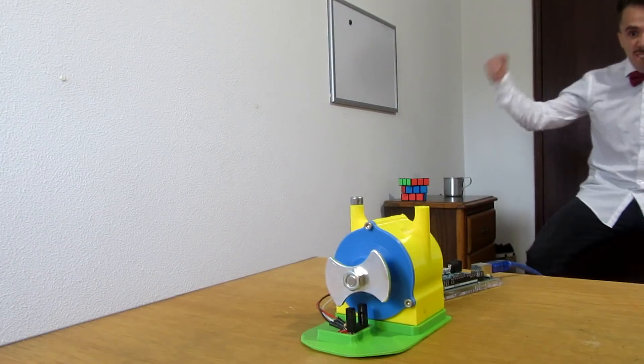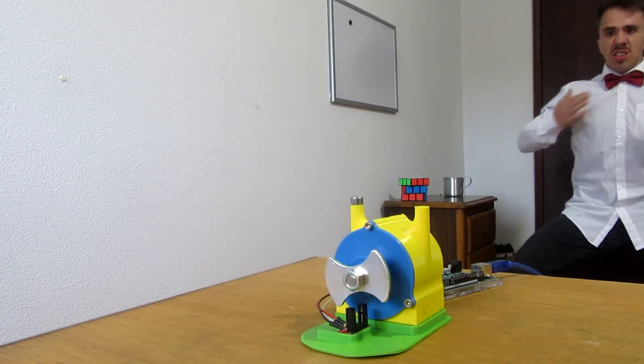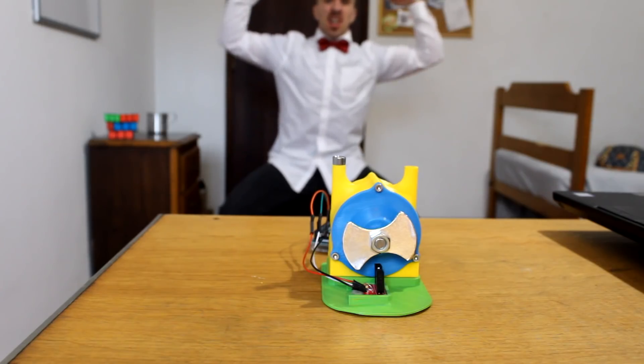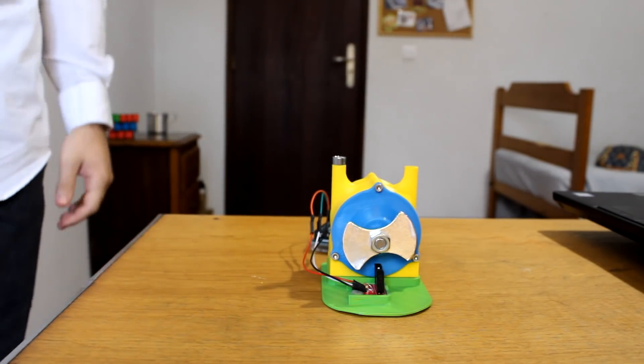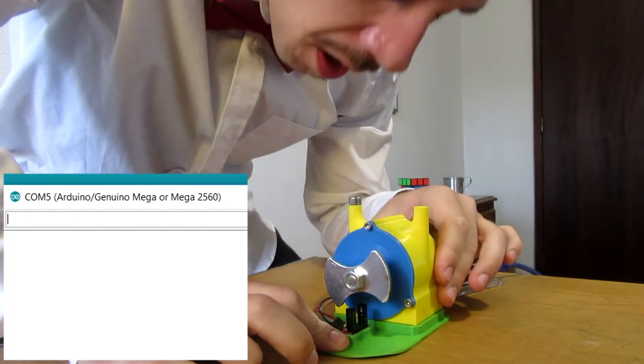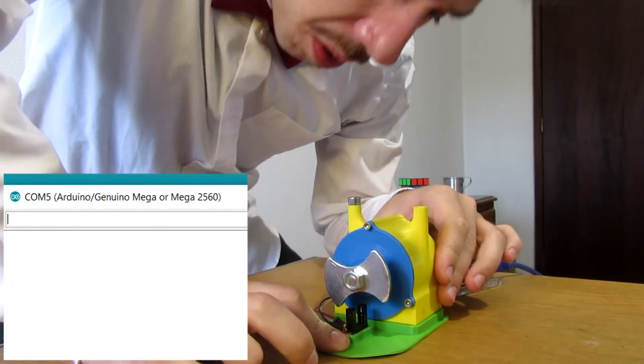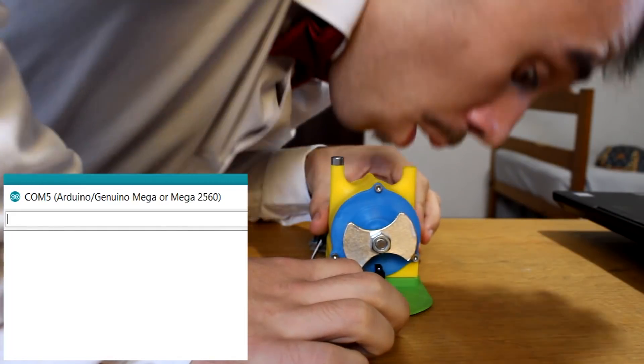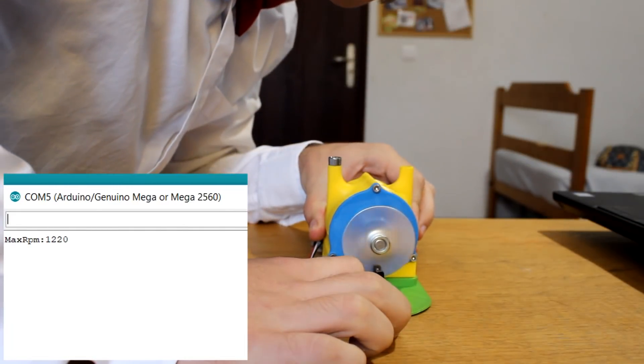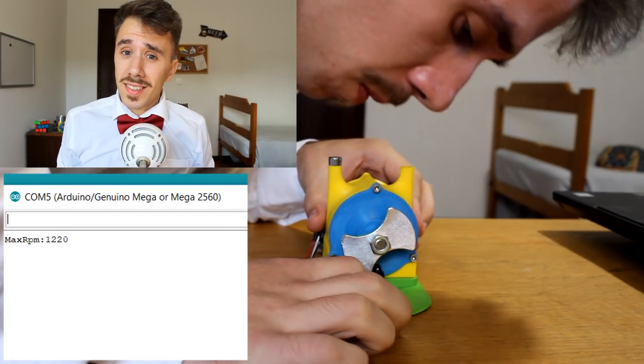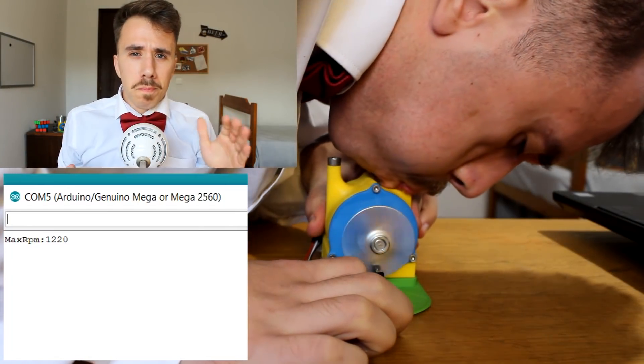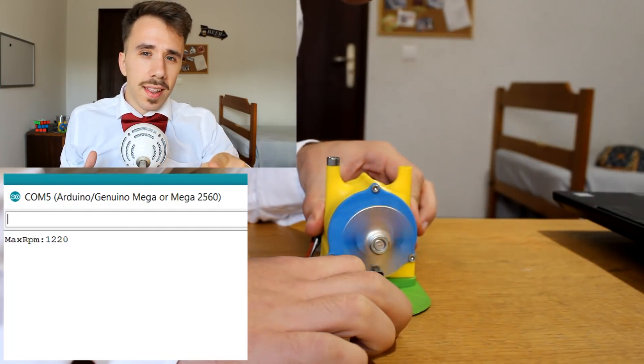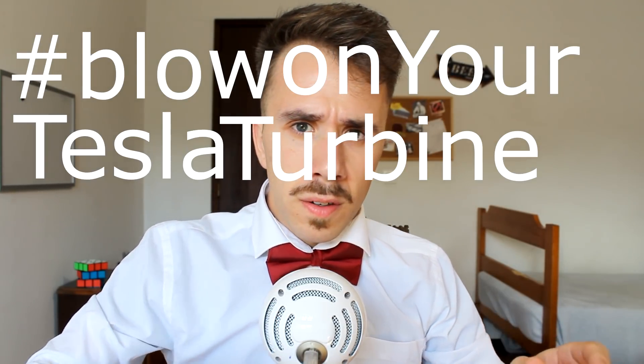After adapting Andry's code a little bit, I was ready to test the turbine. Before using the compressor, I tested it myself. So I used my lungs as power supply, to see how fast I could make this thing spin. Not bad. Not bad at all. I'm actually pretty proud of my result. I would even say that that was a world record. If you want to prove me wrong, accept my challenge - the blow on your Tesla turbine to prove your manliness challenge. Bring it on, bitches!